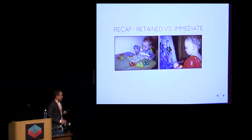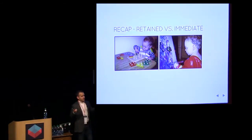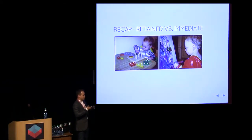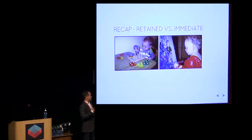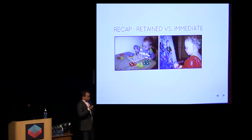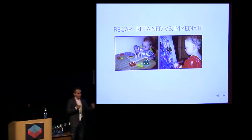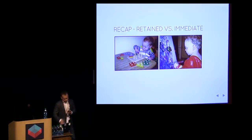Just to recap: in retained mode, both SVG and HTML, you have objects with properties that you can retrieve and change later. In Canvas, it's up to you — you draw and forget, or as a developer you can make objects of whatever you're drawing, and later revisit them if you want to change them.